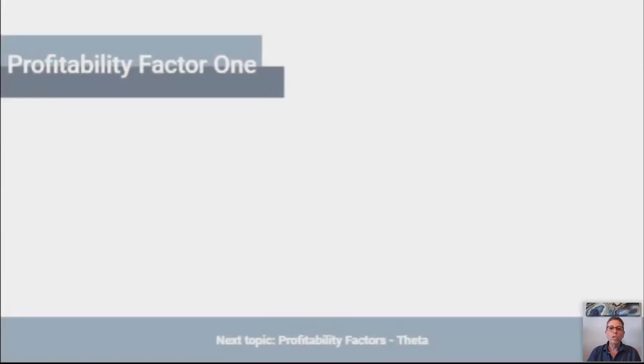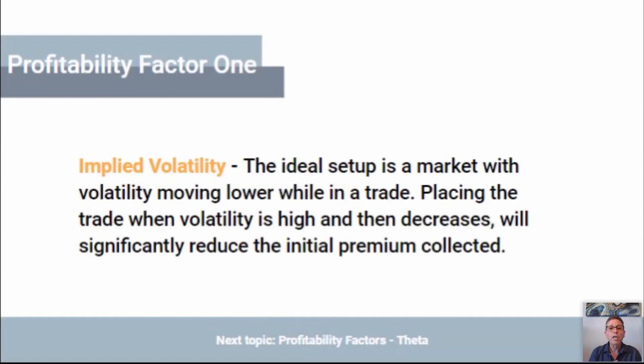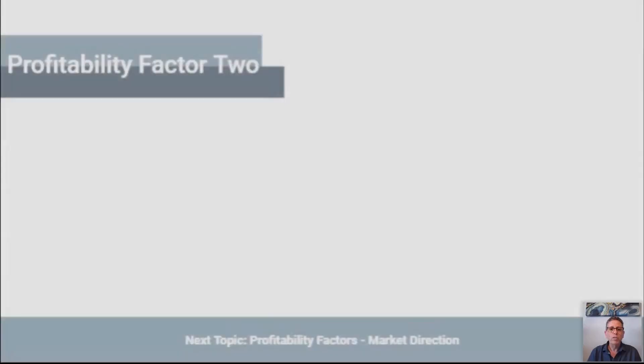Let's talk about the other profitability factors. We talked about decay — that's theta. For implied volatility, you want to enter a trade when volatility is high and exit when it's low. I place the trade in the first five minutes of the trading day, around 9:30 to 9:35. The reason is because generally the volatility at that time is the highest during the trading session. Theta measures the rate of decline of the option's value during the passage of time.